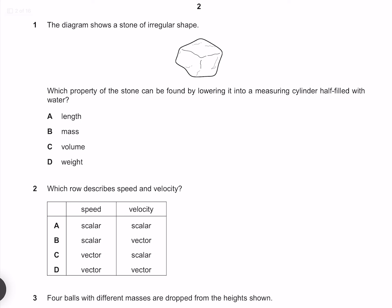The diagram shows a stone of a regular shape. Which property of the stone can be found by lowering it into a measuring cylinder half filled with water? Picturing a measuring cylinder filled with water, lowering the stone into it is going to raise that water level. The difference between the volumes is going to give us the volume of the stone, so our answer is C.